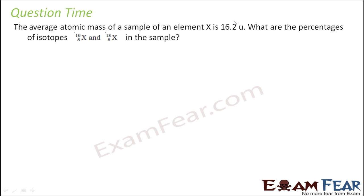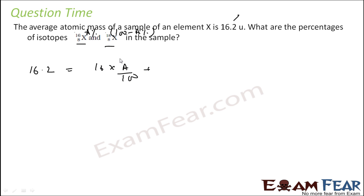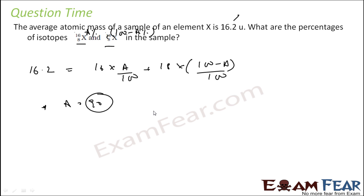The average atomic mass of a sample is given as 16.2 — what is the percentage of isotopes? Let's assume one isotope has percentage 'a' and the other has '100 − a'. So: 16 × (a/100) + 18 × (100 − a)/100 = 16.2. Solving this equation, you get a = 90. That means one isotope is 90% and the other is 100 − 90 = 10%. That is the answer.